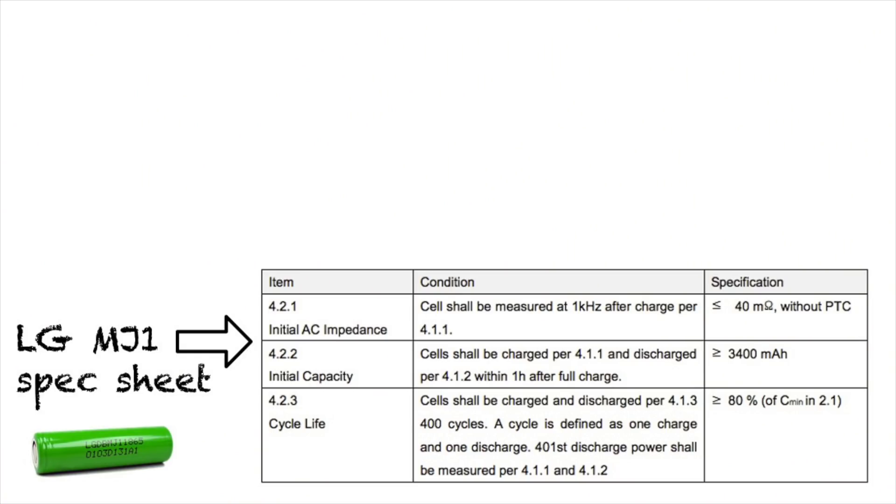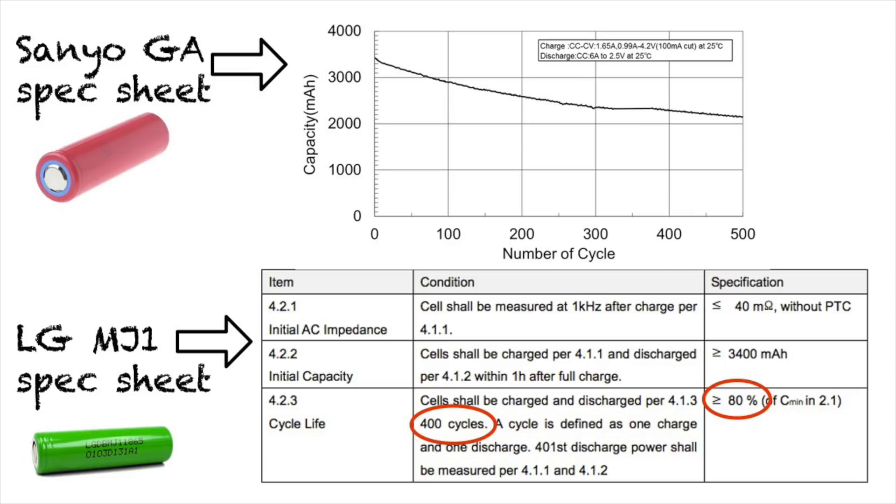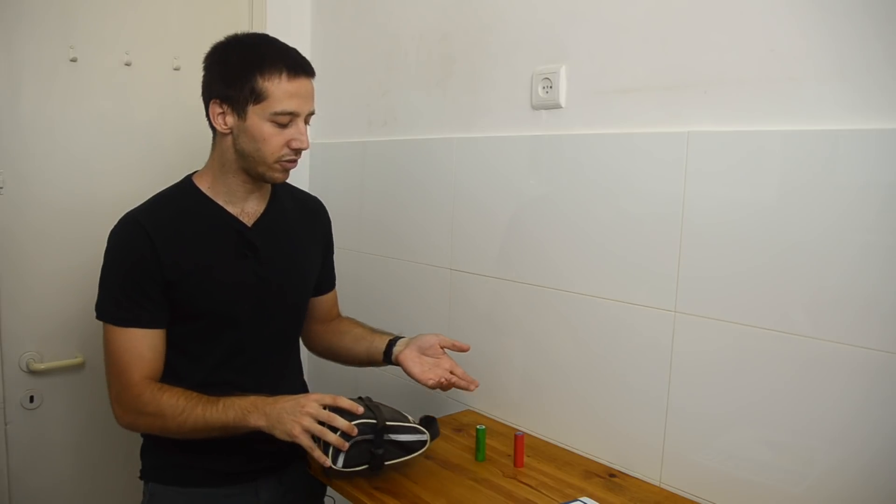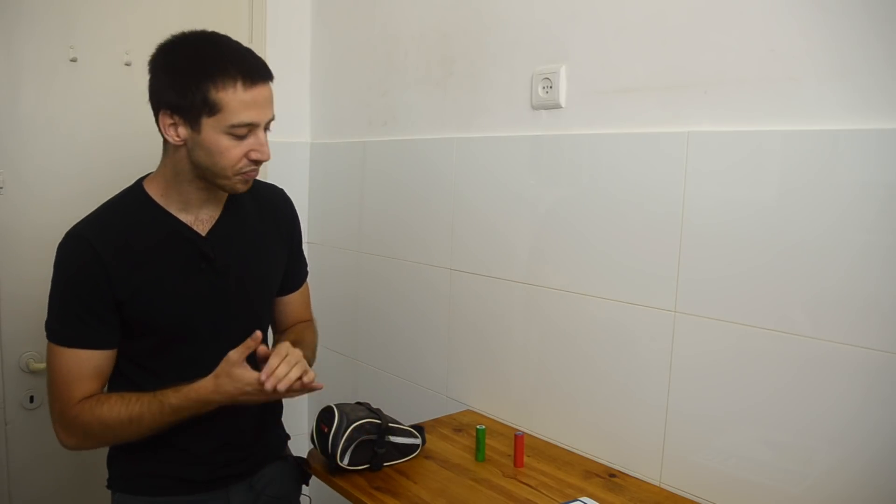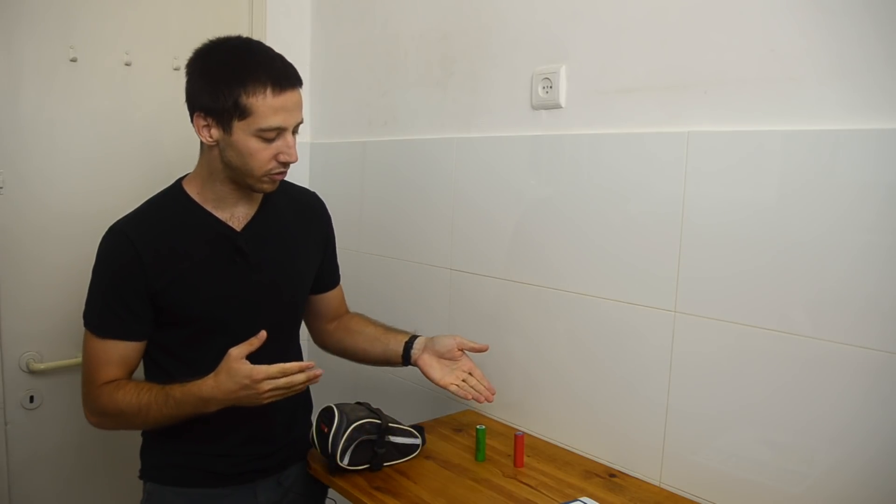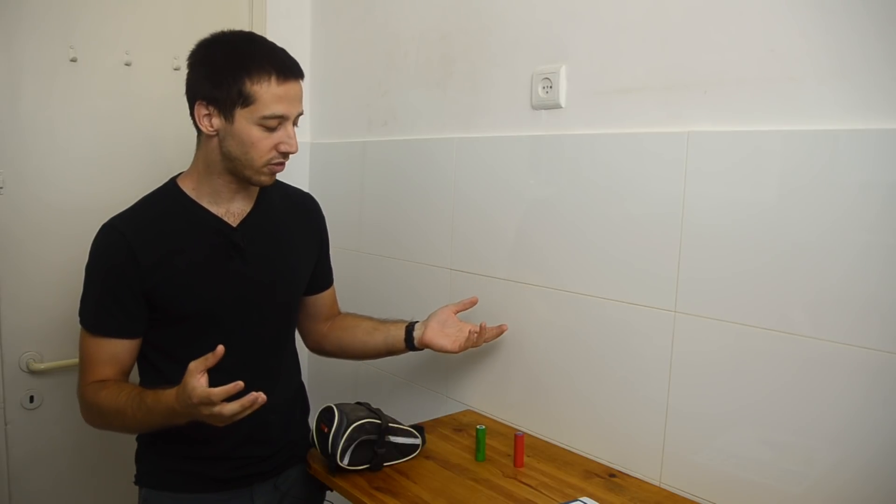The one difference is the cycle life rating, where the LG MJ1 cells are rated for about 400 cycles before they get down to 80% of their original capacity. While the Sanyo 18650 GA cells are only rated for about 180 cycles before they get down to 80% capacity. So they have about half the cycle life. The other thing is LG MJ1 cells are just a little bit cheaper. So I'm going to go with the LG MJ1 cells because they're more economical and they're going to last longer. I'm going to get mine from Vruzen.com, obviously because I'm part of the Vruzen team.